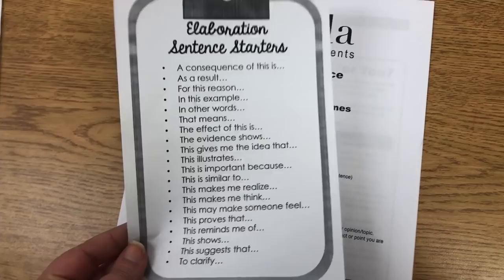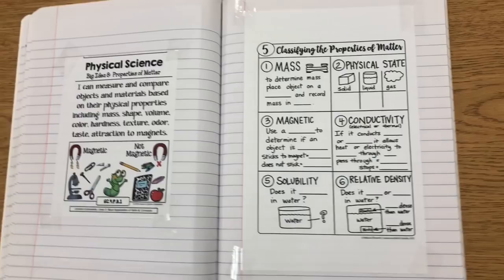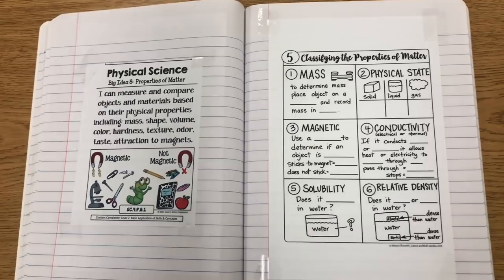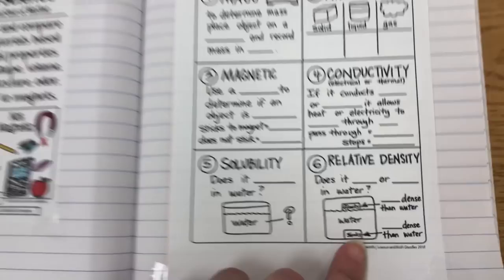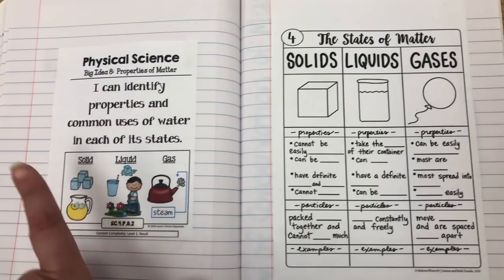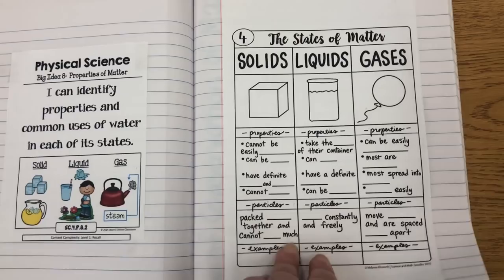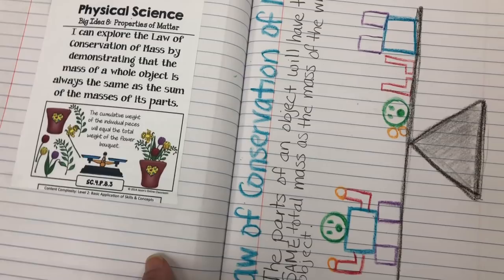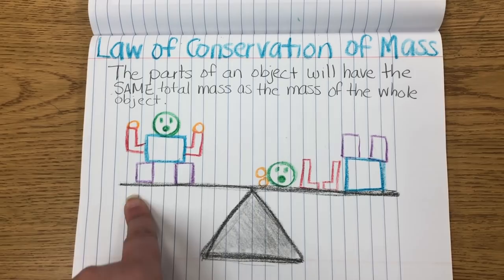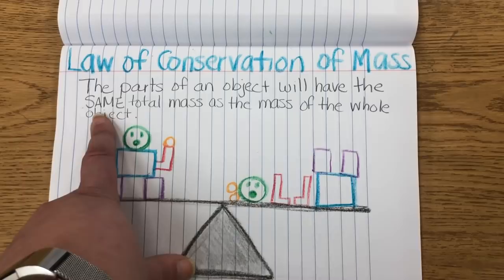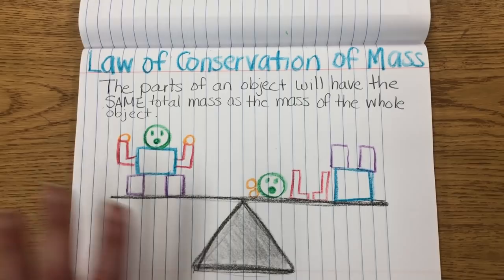I also gave them my elaboration sentence starters to help them with elaboration as they write — that's available in my TPT store, I'll link it below. Now let me show you what we did in our science notebook. This is where we left off last time, from Science and Math Doodles. Today we added the standard from Jason's Online Classroom — an FSA standard students need to know in fourth grade for science — along with the science doodle notes that go along with that standard. We also added the standard for the law of conservation of mass. The students drew a balance and a little robot built versus in pieces — basically the law says the parts of an object have the same total mass as the mass of the whole object.